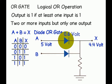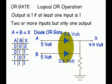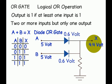Now if both of the inputs are given plus 5 volt, both diodes will be forward biased. Hence similarly 4.4 volt will appear at X.